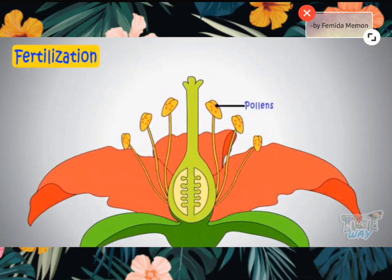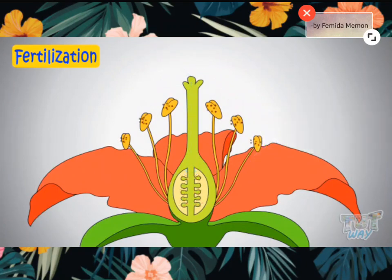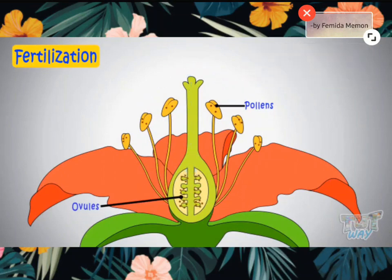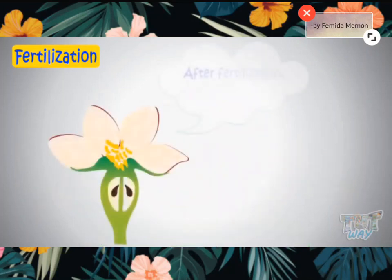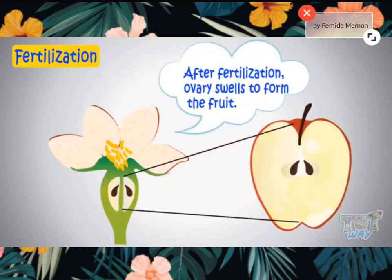When pollens from the anther of the stamen join with the ovules present in the ovary, we call it fertilization. Fertilization forms the seeds inside the ovary. And after fertilization, the ovary changes into a fruit. That's why seeds are found inside the fruit.